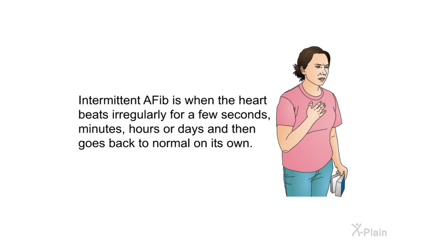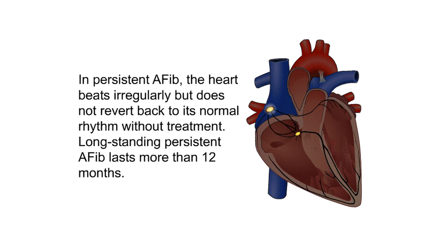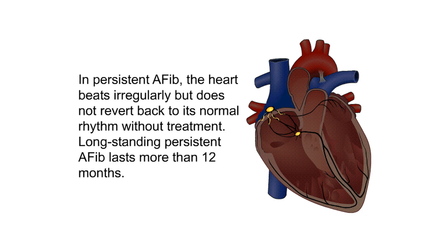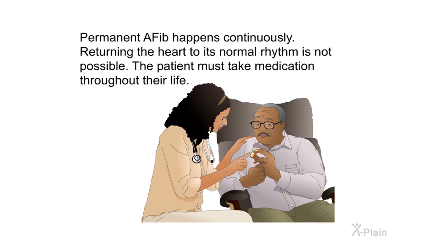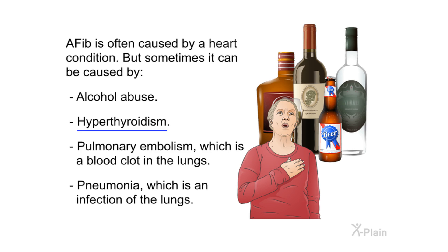Intermittent AFib is when the heart beats irregularly for a few seconds, minutes, hours, or days, and then goes back to normal on its own. In persistent AFib, the heart beats irregularly but does not revert to its normal rhythm without treatment. Long-standing persistent AFib lasts more than 12 months. Permanent AFib happens continuously; returning the heart to its normal rhythm is not possible, and the patient must take medication throughout their life. AFib can sometimes lead to blood clots, stroke, or heart failure.